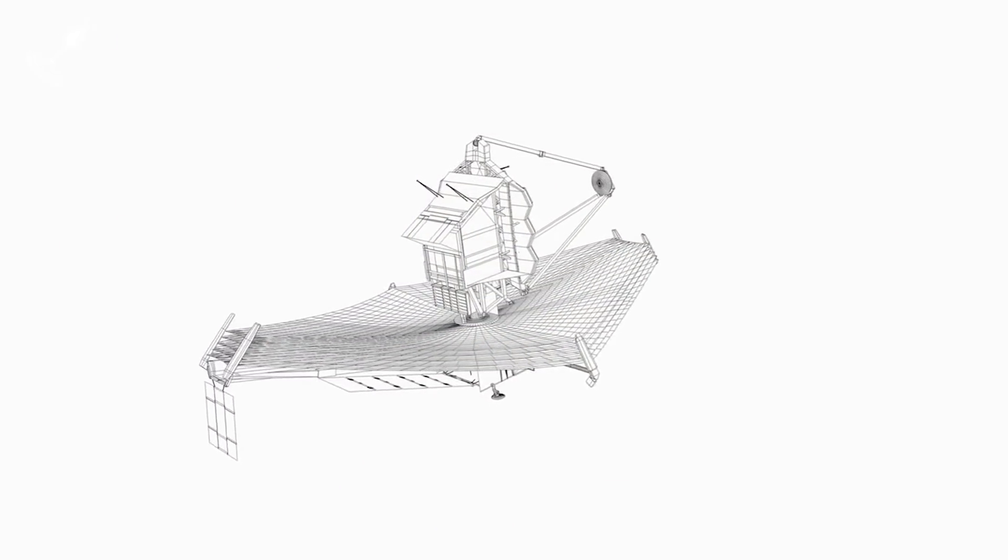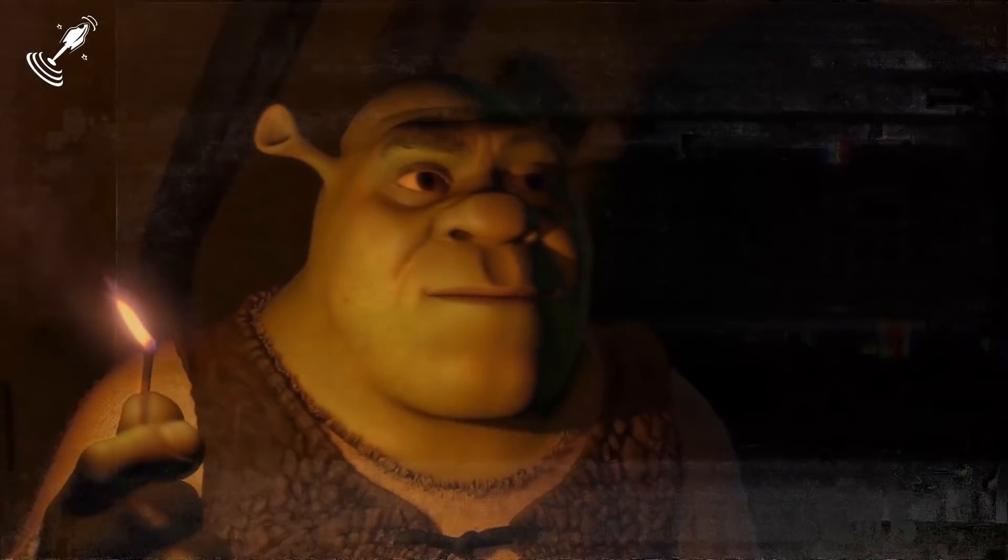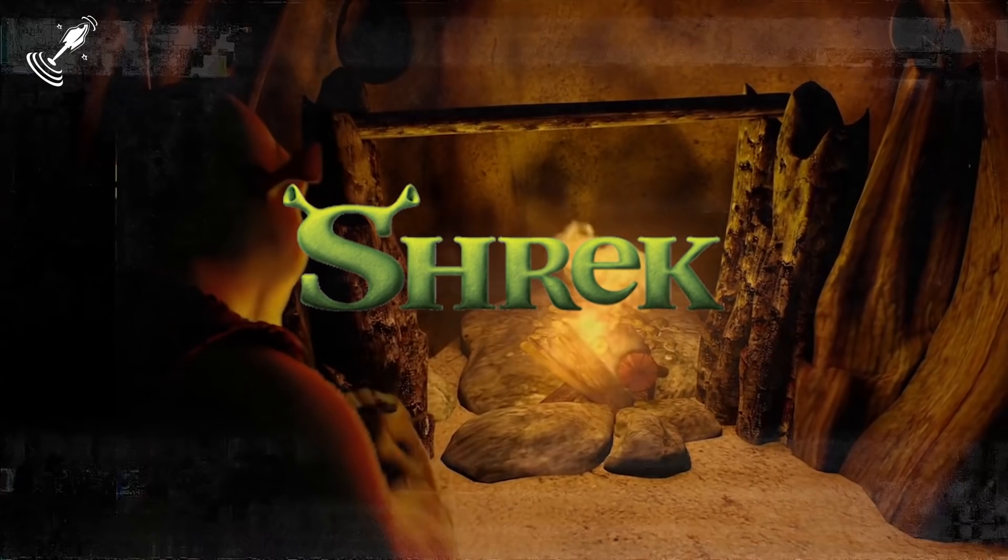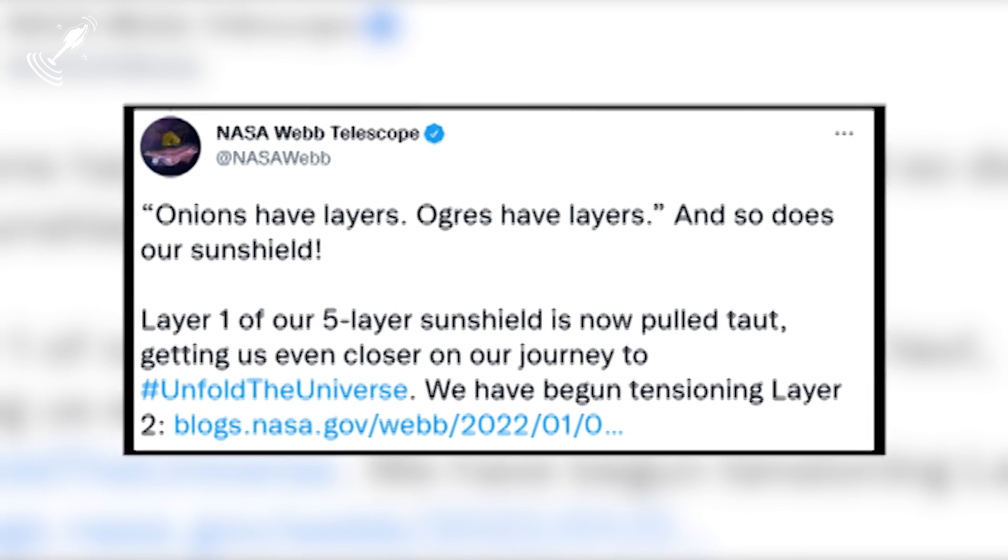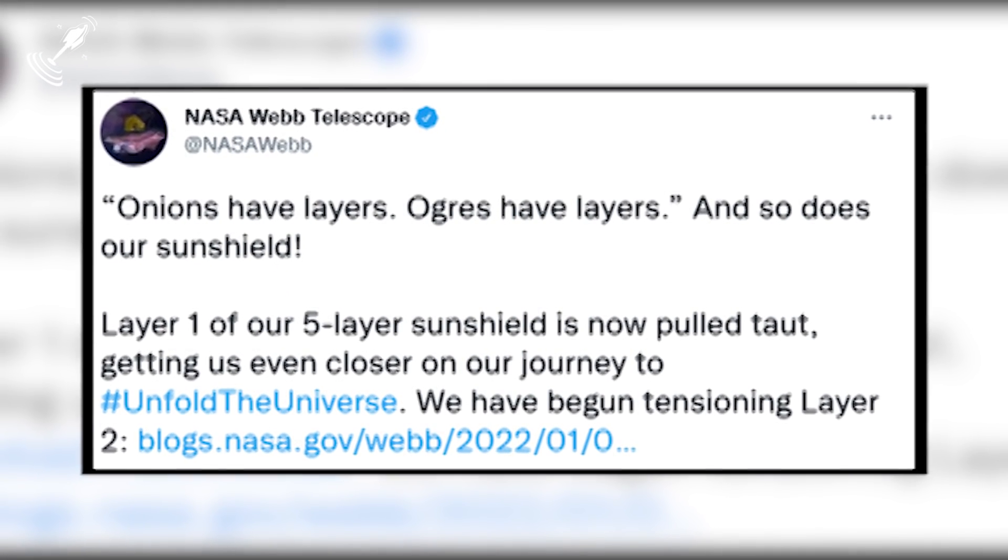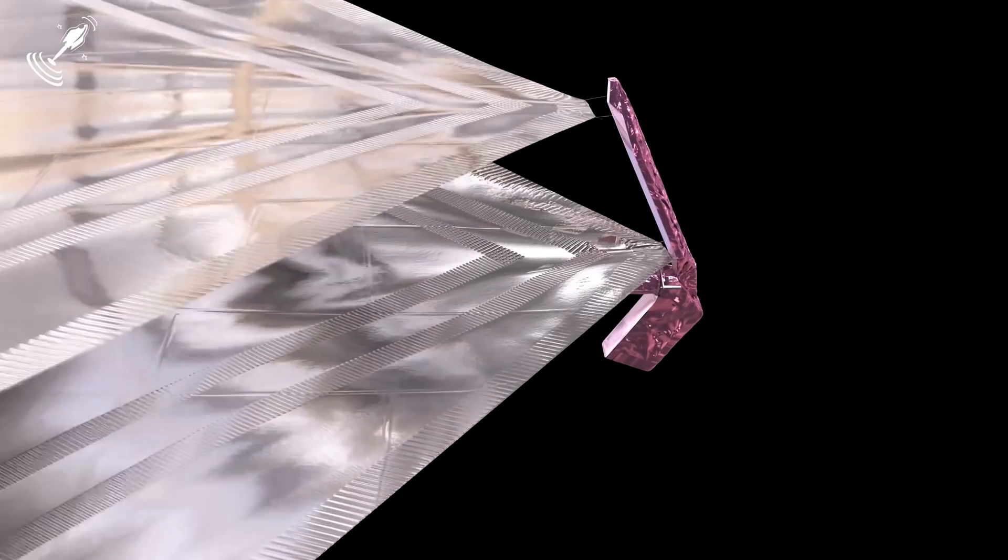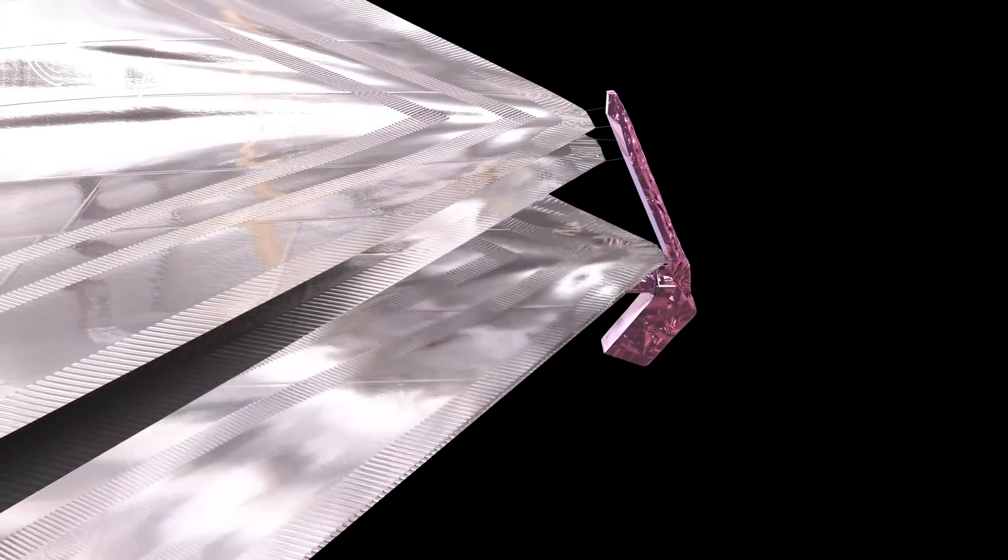The funniest part about what is next to come is how NASA compared the work to ogres. So the telescope is more like the movie Shrek than you think. NASA used its Twitter account to tweet that onions have layers, ogres have layers, and so does our sunshield. The tweet was in reference to the completion of the tightening of the first three layers of the sunshield, out of the five.